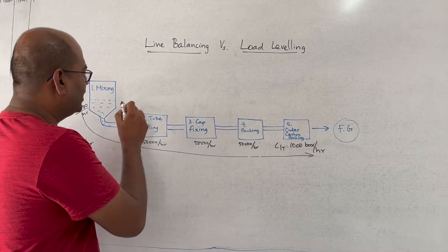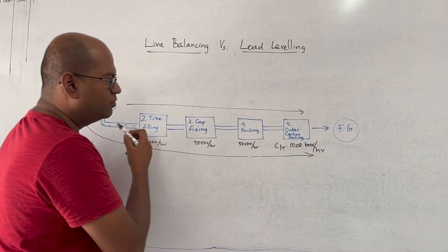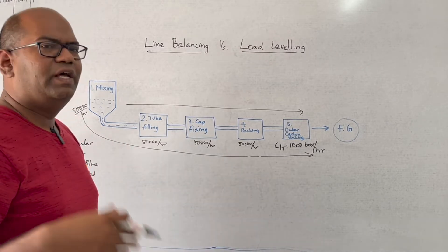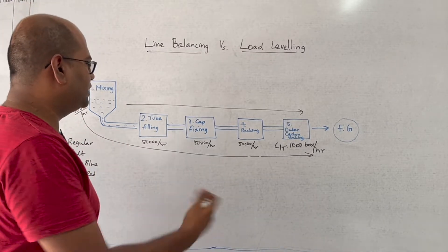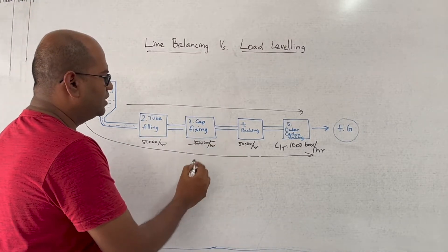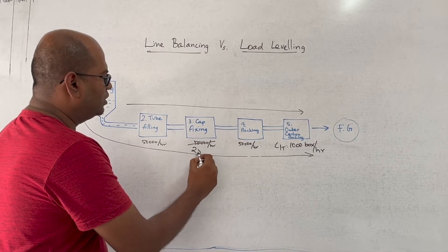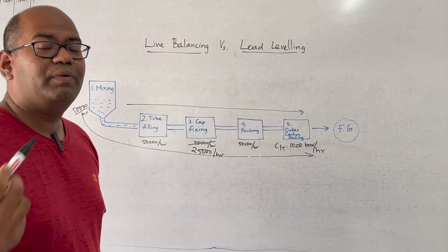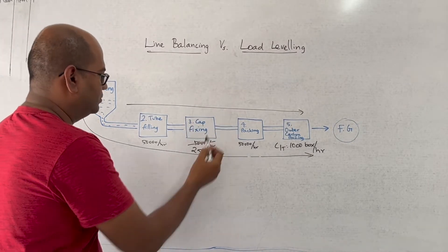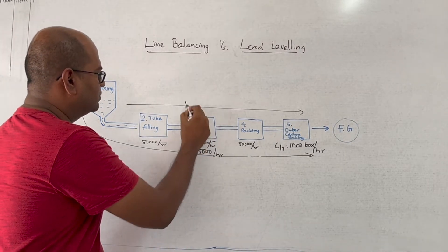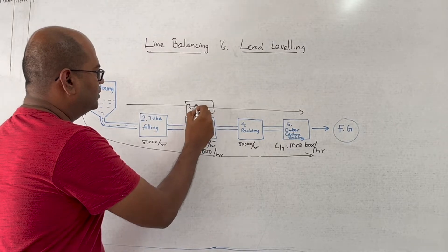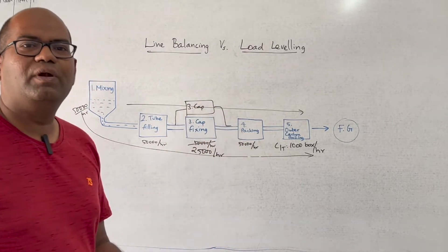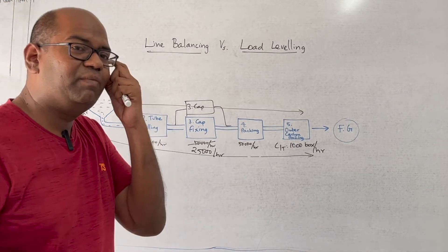If all machines have the same capacity, the line will run continuously without any WIP or need for buffer stock. But if there is a problem — say the cap fixing machine has a capacity of only 25,000 per hour instead of 50,000 — what companies normally do is add an additional machine. So now you have two cap fixing machines, each at 25,000, giving a combined 50,000 per hour. That's how companies do line balancing.